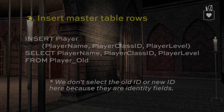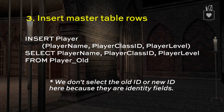The next step is to insert master table rows. We want to take the player name, player class ID, and player level and insert them from the old to the new. We don't select the old or new IDs because they're identity fields — those are taken care of already. We don't want to insert the old one, and we can't tell it to insert the new one, so we just leave that out of the insert statement.